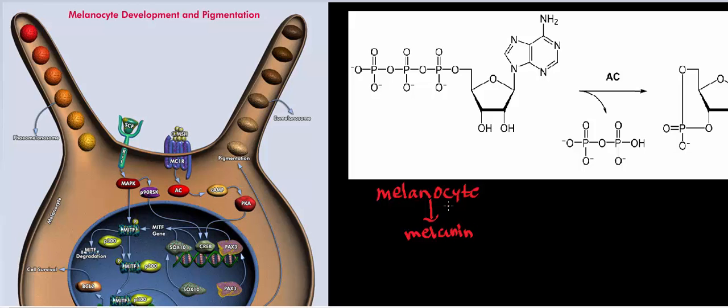UV light is an extremely energetic form of light, so it can cause formation of free radicals in DNA — something you don't want. So the melanin acts sort of like border patrol, protecting the underlying tissues from ultraviolet light from the sun.